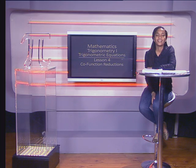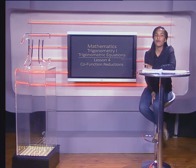Hello Grade 11s. Today we will look at co-function reductions. This type of reduction follows from reductions of the horizontal axis. These are reductions of the vertical 90-degree axis. We only have to consider 90 degrees plus and minus theta, and not reductions of 270 degrees. In these reductions we use the co-ratios.